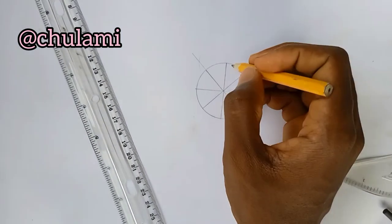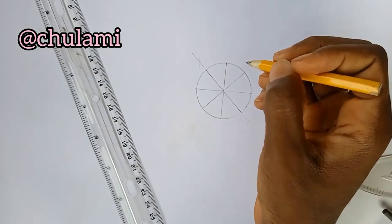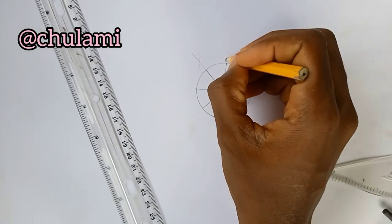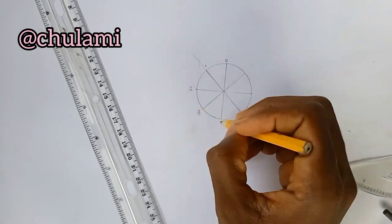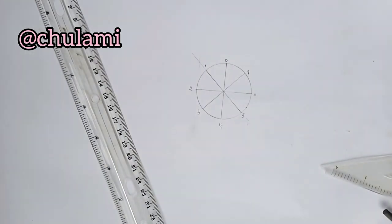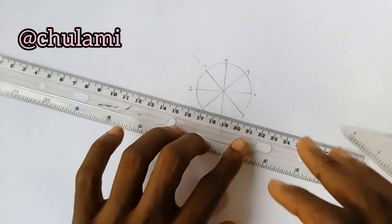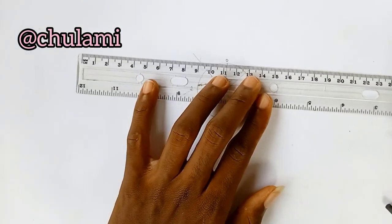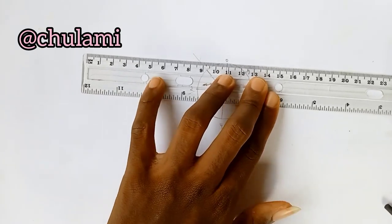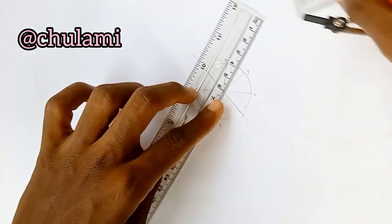So I'm moving it. The next thing I want to do is from point zero I'm going to draw a straight line, a very straight line.